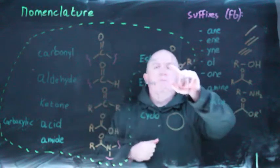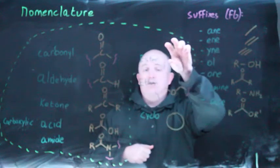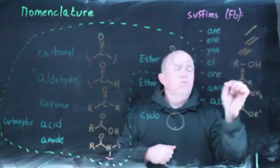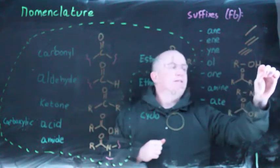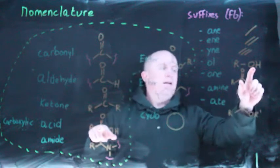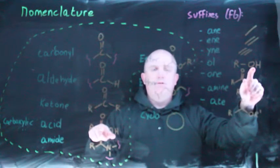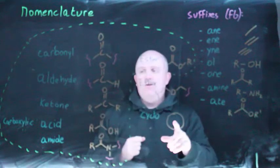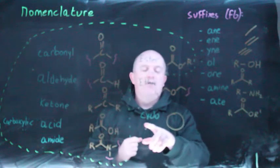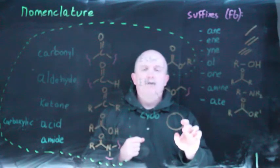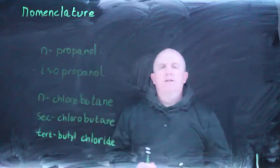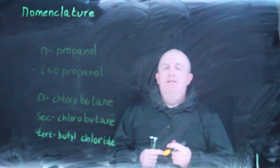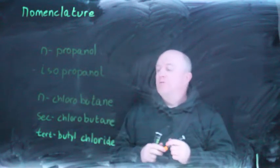An amide has a nitrogen bound to the carbonyl carbon. An ester has an oxygen bound to another carbon, which is itself bound to the carbonyl. Ether and ester are related — an ether has an oxygen with a carbon on either side, but no carbonyl. An ester also has that oxygen between two carbons, but it must also have a carbonyl. The carbonyl matters a lot and is something to pay attention to throughout both Organic 1 and 2.